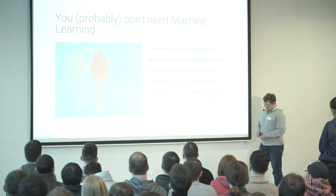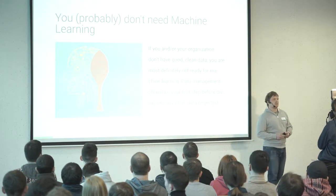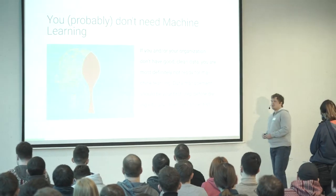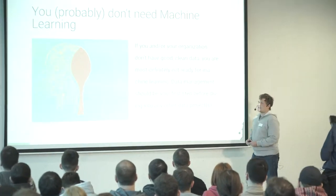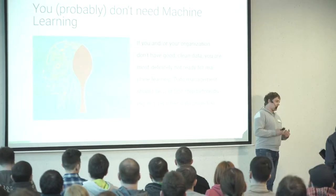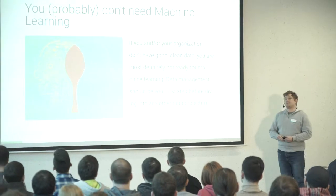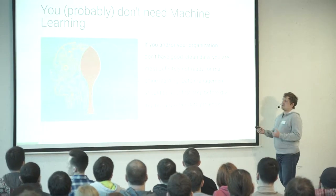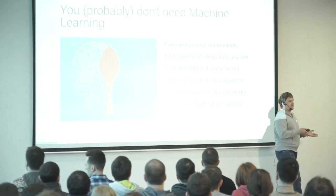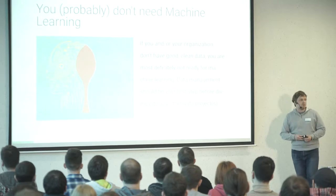Let me provide a little example. We developed an application for a client who said they need an interesting application. This application should synchronize any online banking account, get transactions from these banking accounts, and categorize them automatically — like, if it's fuel, it's pending for cars; if it's food, it's categorized as food. And we decided machine learning is very good for this.